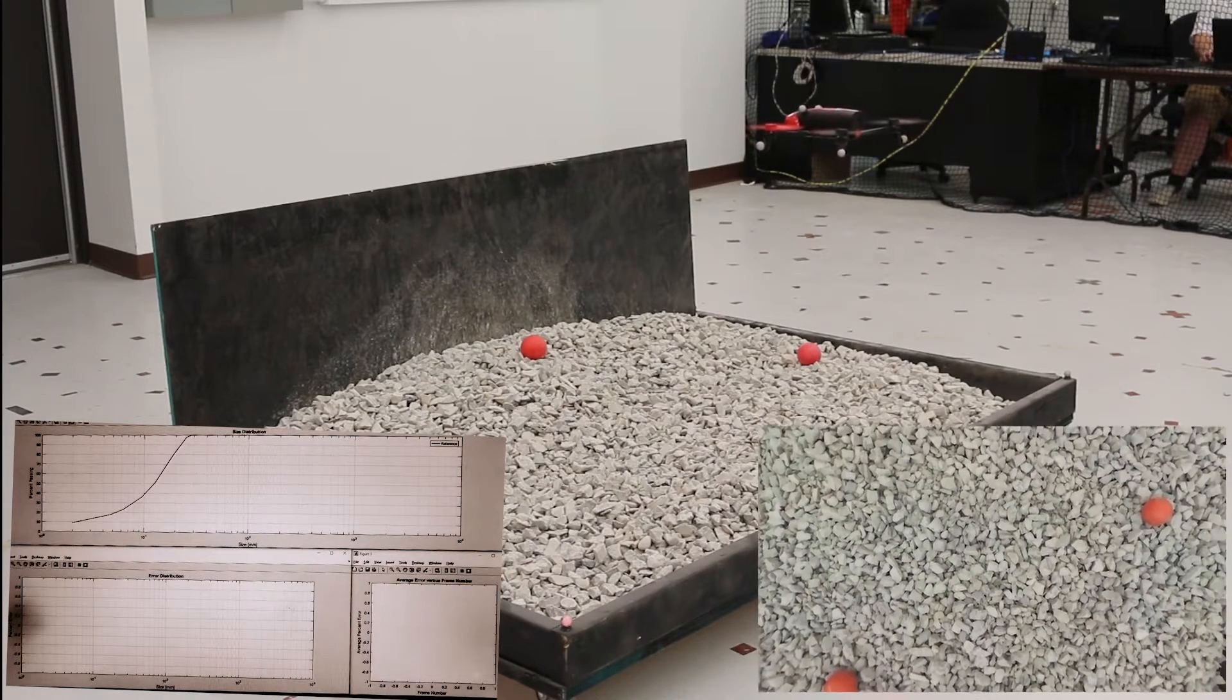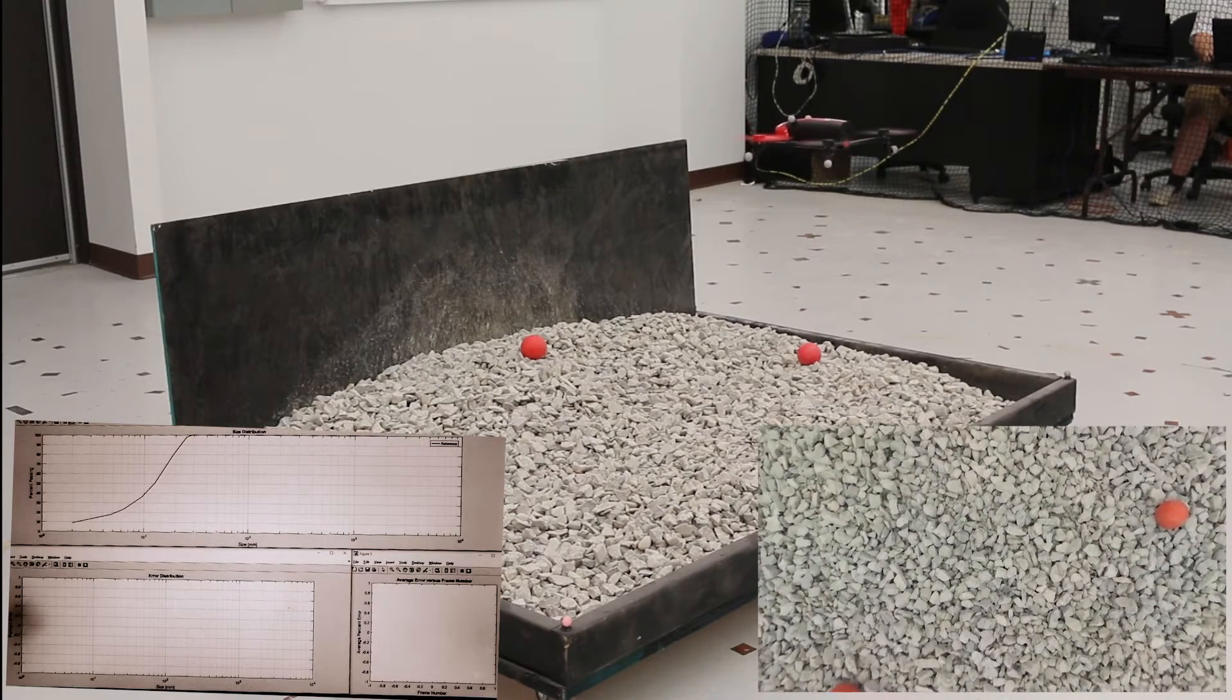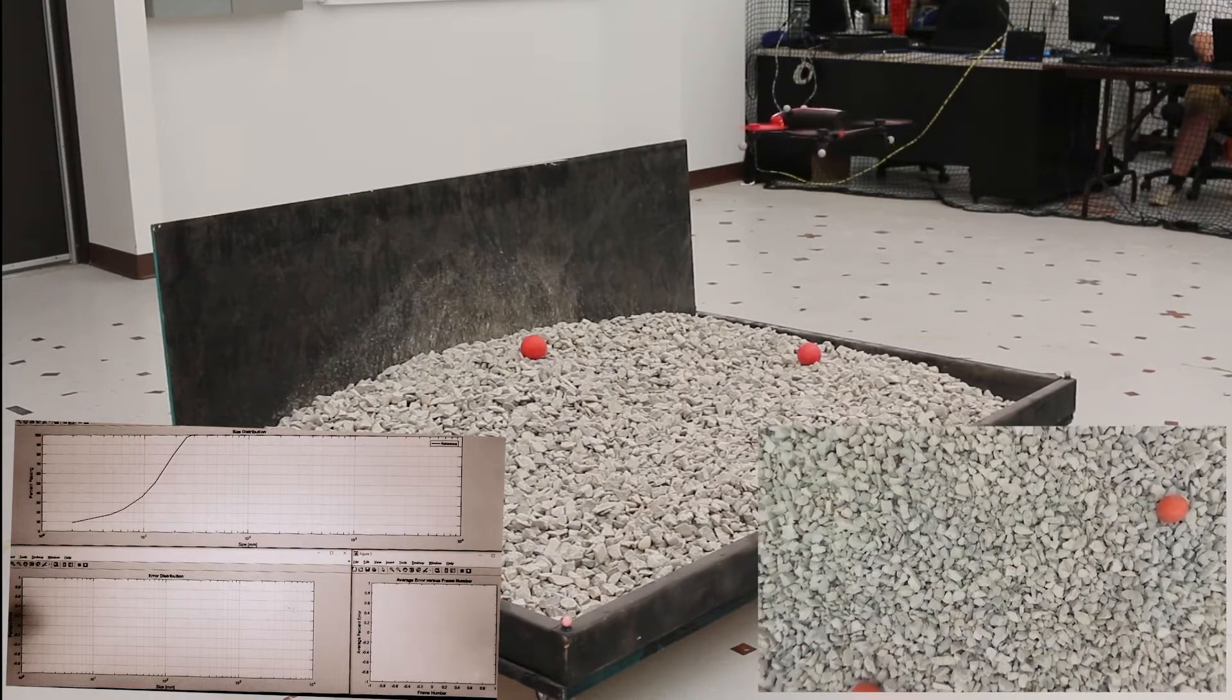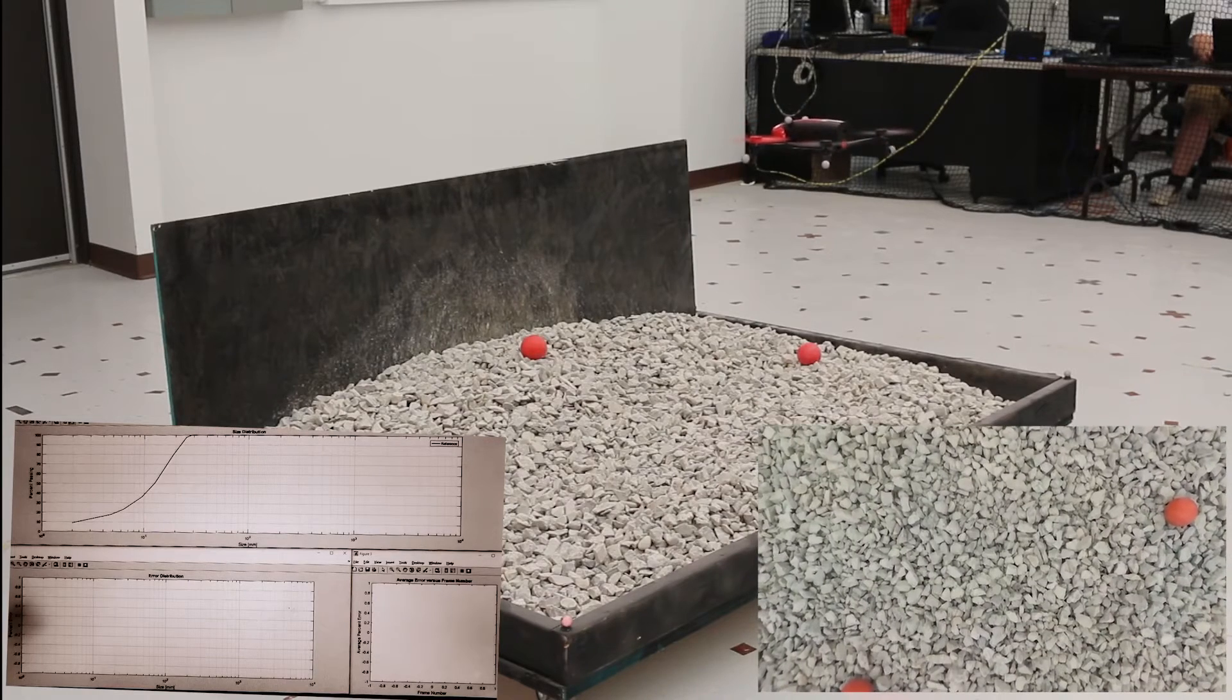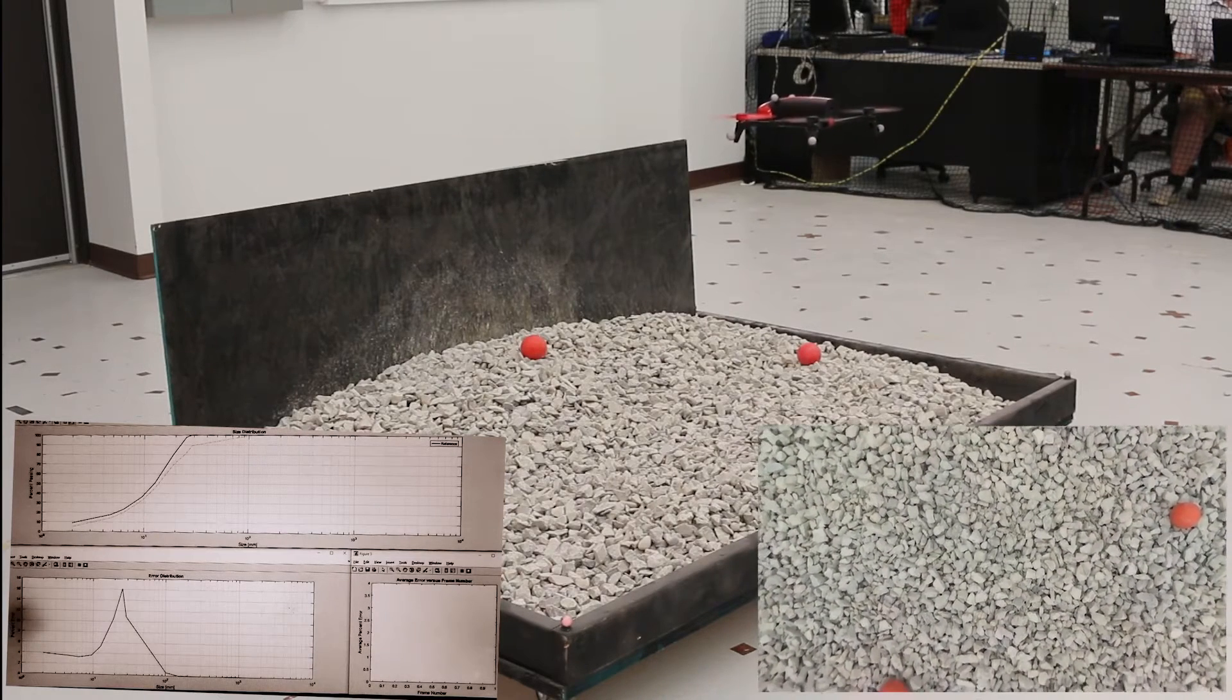The rock pile in the video has a known size distribution, ranging from coarse gravel to fine sand. This distribution is plotted on the lower left using a solid blue line.